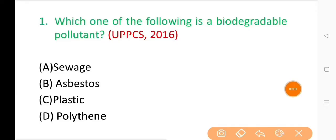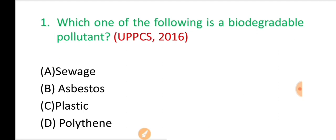Question No. 1: Which one of the following is a biodegradable pollutant? The correct answer is Option A: Sewage.